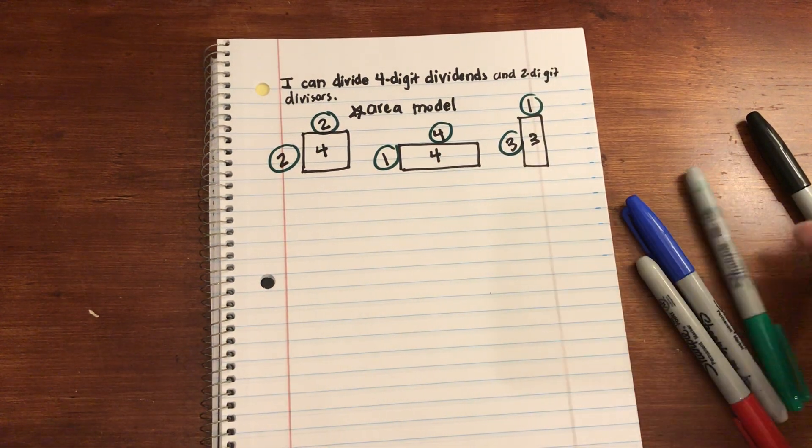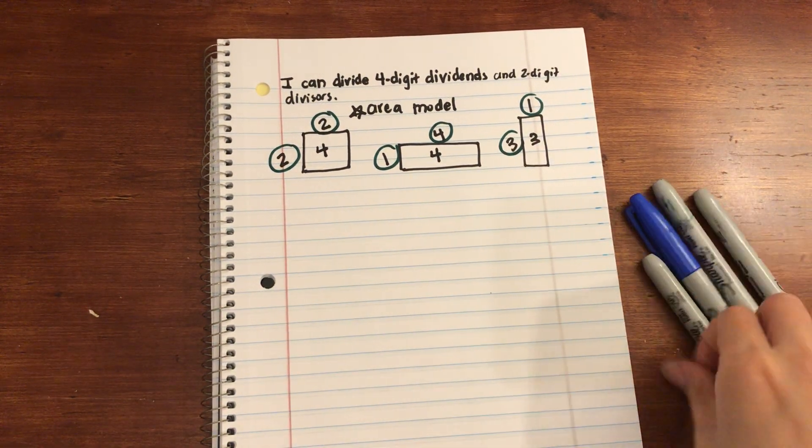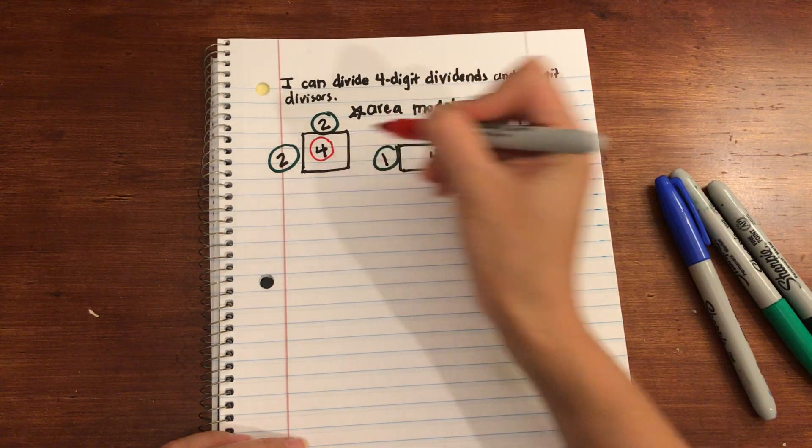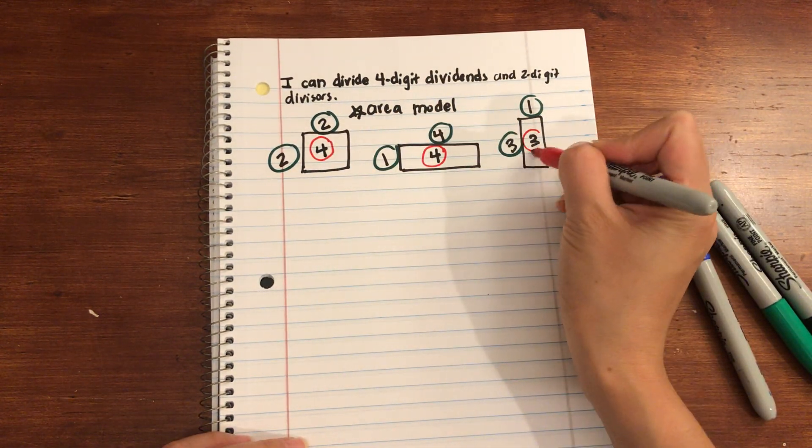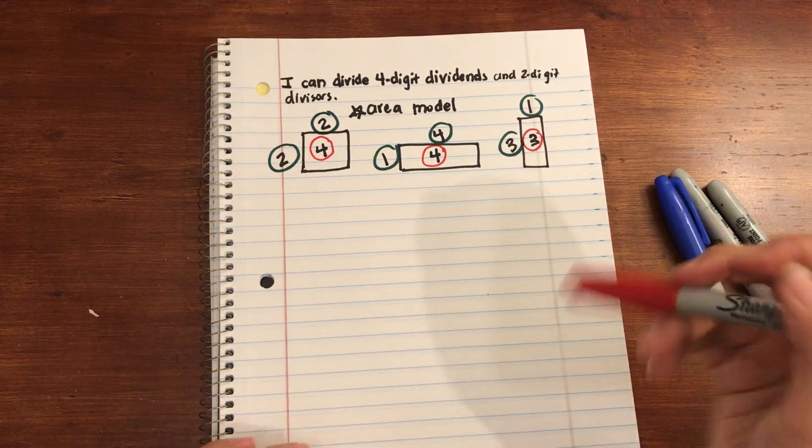And the numbers that are in red are going to be the products. In this case, it's going to be the area.